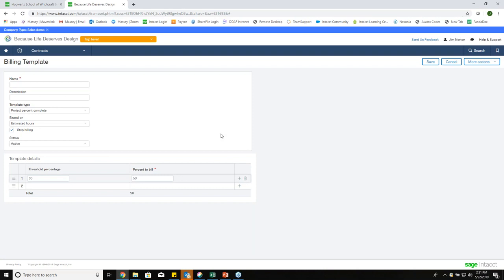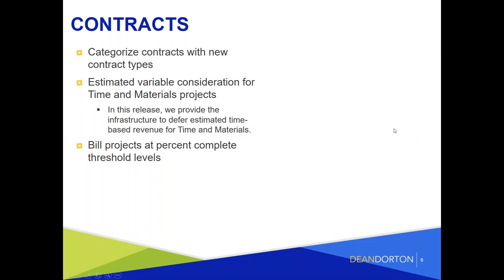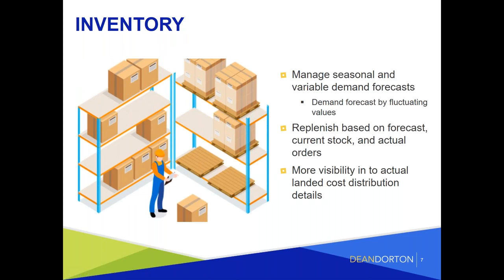In inventory, they've made adjustments to help you manage seasonal and variable demand forecasts. You can do a demand forecast by fluctuating values, replenish based on your forecast, current stock, and actual orders, and you have more visibility into actual landed cost distribution details. Replenishment needs are not always static, so this release allows you to manage seasonal or fluctuating replenishment forecasts using a new method called 'Demand Forecast by Fluctuating Values,' which lets you define variable inventory needs by date. This controls for seasonality and helps you avoid running out of stock.